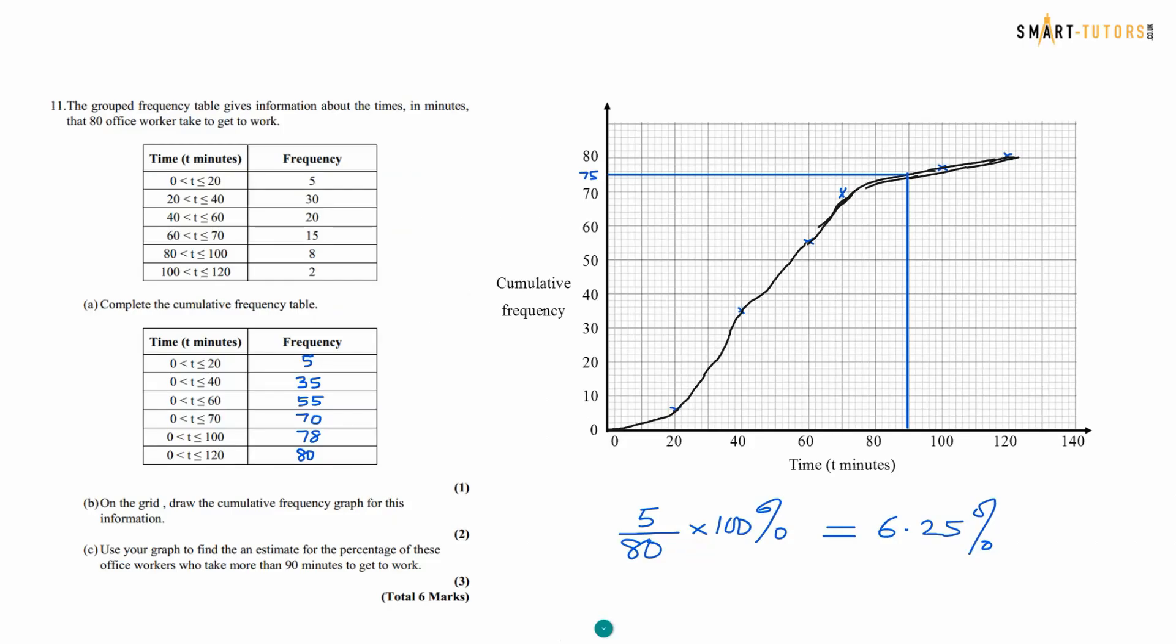Question number 11. The group frequency table is given and they ask you to complete the cumulative frequency table. So all what you want to do is you add 5, 5 plus 30 is 35, 35 plus 20 is 55, 55 plus 15 is 70, 70 plus 8 is 78, 78 plus 2 is 80. On the grid, draw the cumulative frequency graph for this information. So all what you want to do is you pair them up.